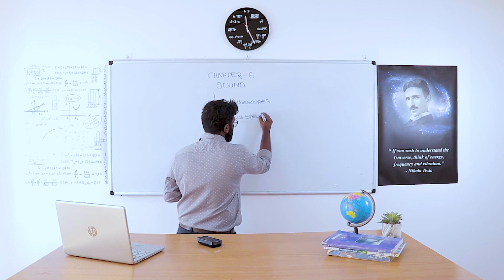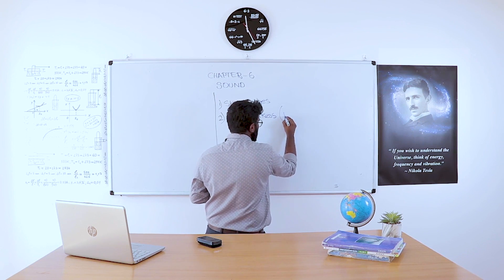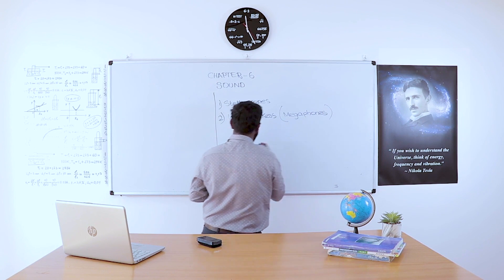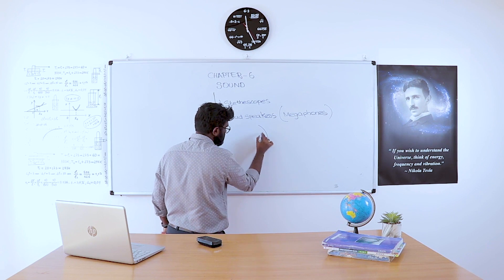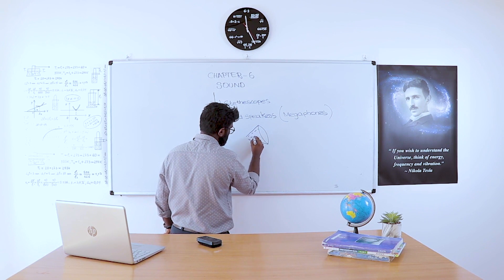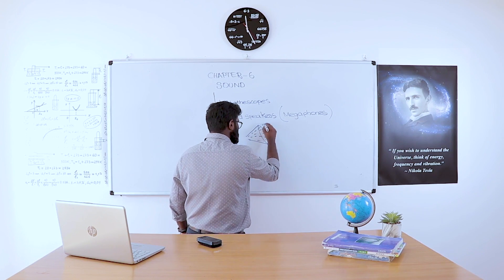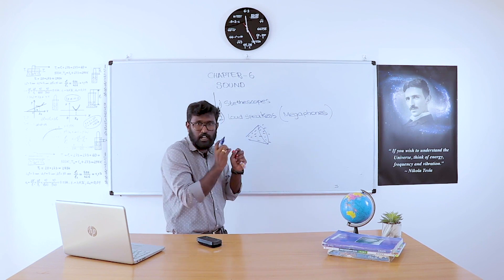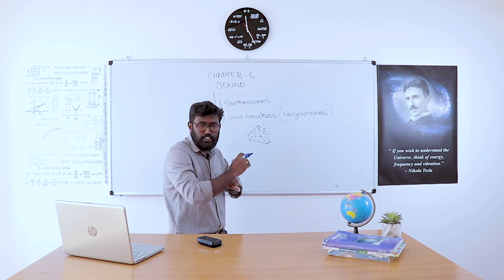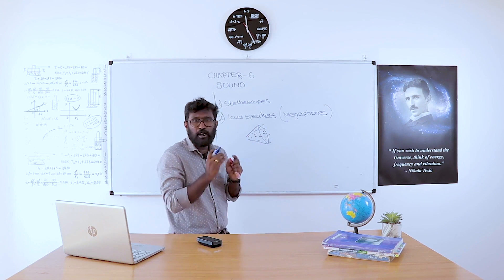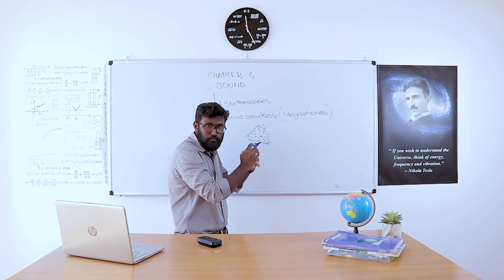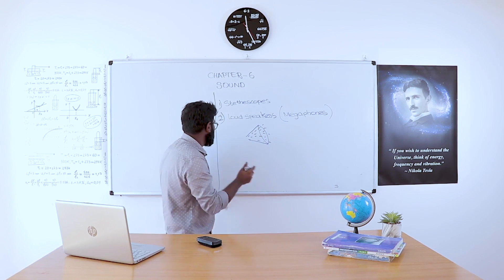The second application is loudspeakers, also called megaphones. The sound produced from megaphones — which are of a particular shape — is uniformly distributed to each area. That is due to multiple reflections inside the megaphone, so the sound emitted reaches uniformly everywhere.